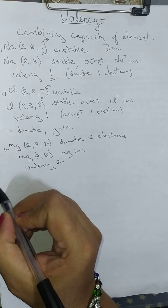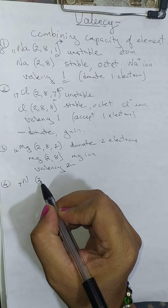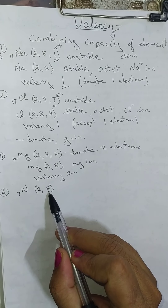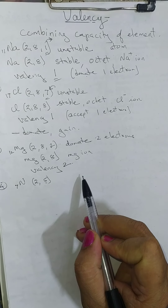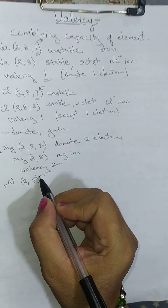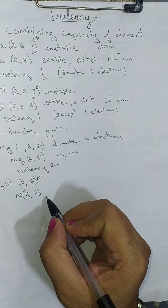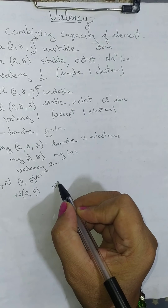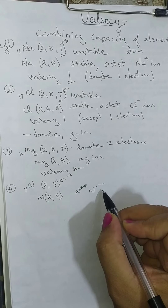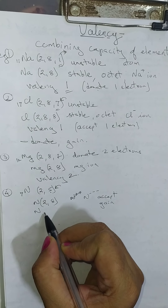Let us take the example of nitrogen. Its atomic number is 7, so its configuration is 2, 5. To complete its octet and become stable, it does not donate the 5 electrons; instead it accepts 3 electrons. When it accepts 3 electrons, it becomes nitrogen with configuration 2, 8, carrying 3 negative charges. This is the nitrogen ion.